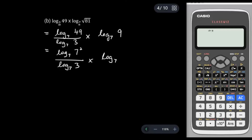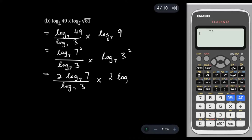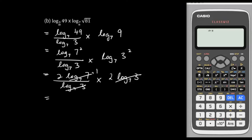So log₇49: since 49 is 7², we bring down the power to get 2 log₇7, over log₇3. Then for the second term, 9 is 3², so we bring down the 2. We can then cancel log₇3 top and bottom, and also cancel the 2s. We get 4 log₇7, and since log₇7 = 1, the answer is 4.